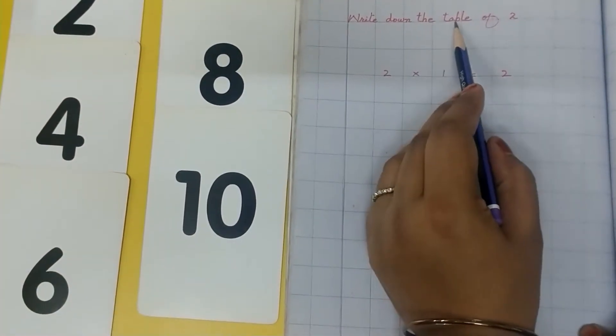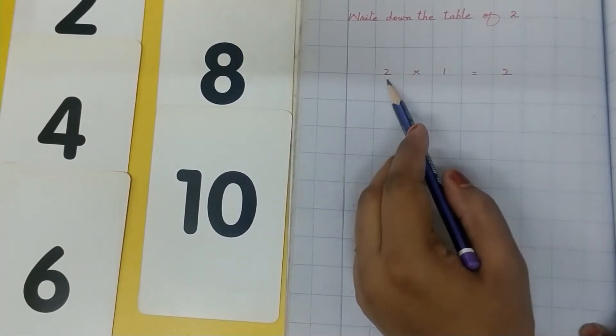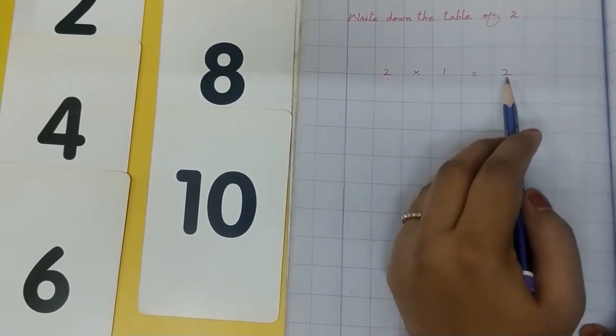Write down the table of 2. 2 multiplied by 1 is equal to 2.